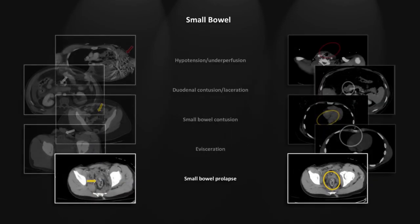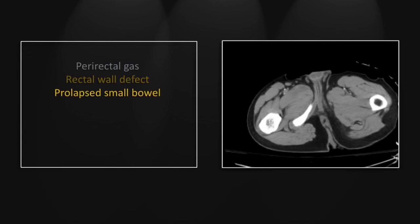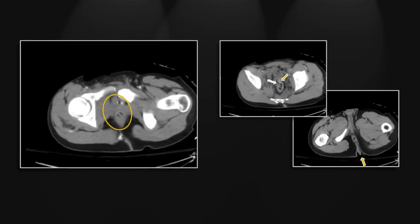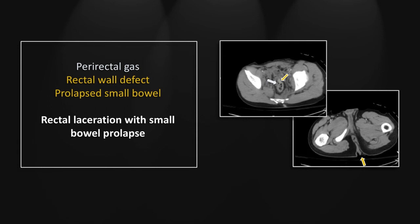Our next case is a small bowel prolapse. There is a small focus of perirectal air immediately adjacent to a defect in the anterior wall of the rectum. That rounded density seen anteriorly is a loop of small bowel passing through the defect in the anterior rectal wall, ultimately passing through the rectum and out the anus to prolapse. That is a rectal laceration with small bowel prolapse. The clinical history on this case would have made Hemingway jealous — it said simply: rolled, ejected, crushed.